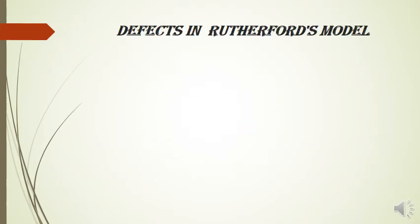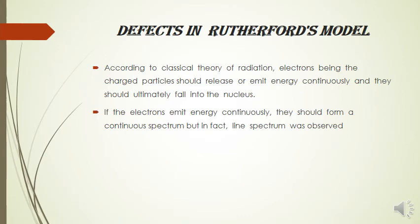We saw the experiment, observation, result, and model. Now let's see the defects in Rutherford's model. According to classical theory of radiation, electrons being charged particles should continuously release or emit energy. If electrons emit energy continuously, it would form a continuous spectrum, but in fact, line spectrum was observed.